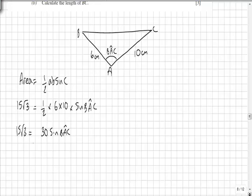Dividing through by 30 on either side, we can see 15 over 30 would in fact be a half, so root 3 upon 2 is equal to sine BAC.